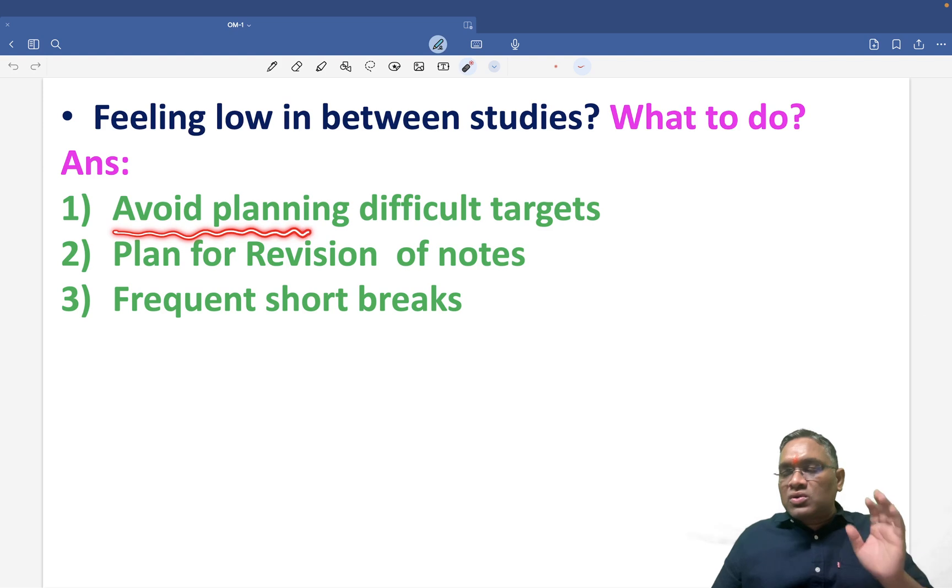So in that process, what you will do, you will avoid planning the difficult targets. Don't make a difficult target that you will revise entire pathology or entire medicine in one day. Take small, small steps and try to complete them. Assure yourself that you are doing good. Motivate yourself. Appreciate yourself. This is the way you can be happy in the last moment and you can be stress free at least up to certain extent.